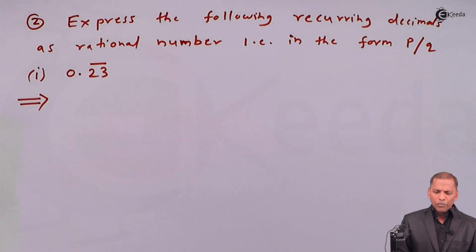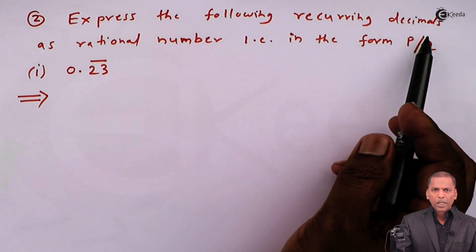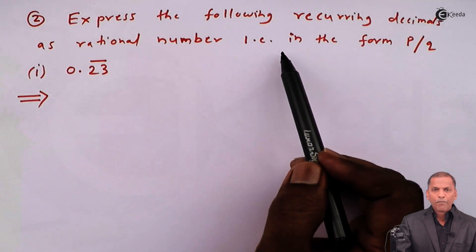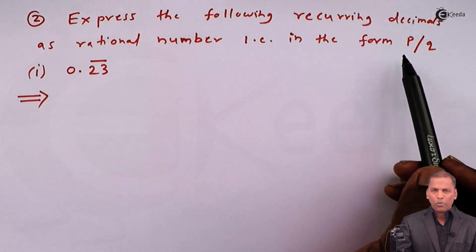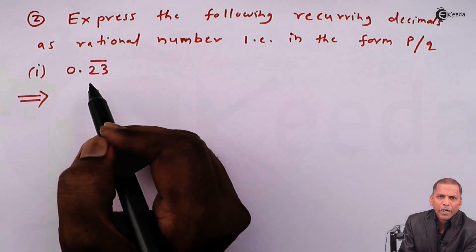The problem number 2 sub question 1 is: express the following recurring decimals as a rational number, that is in the form P upon Q. The sub question 1 is 0.23 bar.